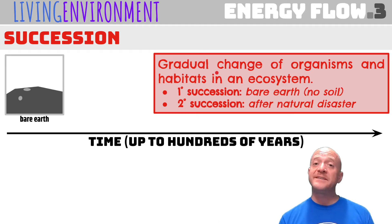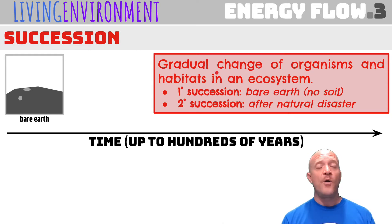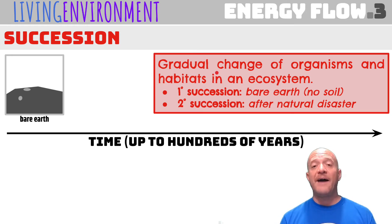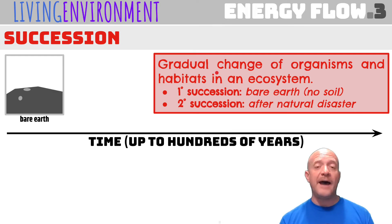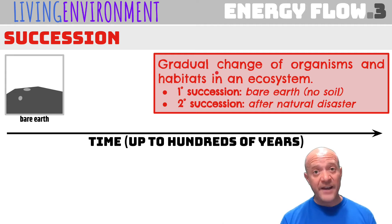Primary succession occurs when there is bare earth or rock — in other words, there is no soil. For example, it could be after a glacier retreats, or it could be after new land is formed through the actions of volcanoes, like in Hawaii.